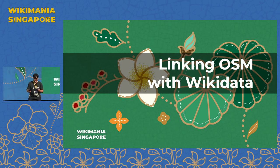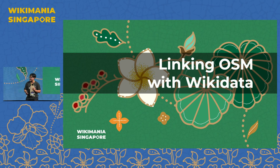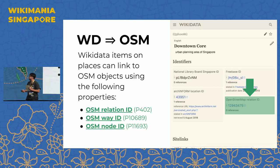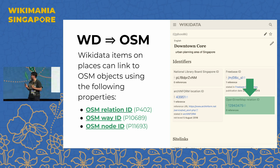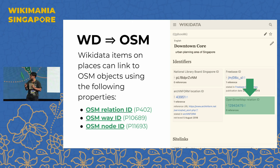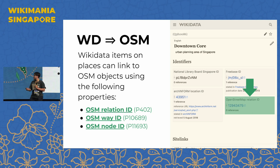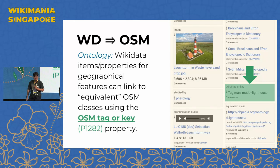Now let's go into linking OSM to Wikidata. First, we can add an OSM relation ID (property P10402), way ID (P10689), or node ID (P11693) on Wikidata items. If you look at any Wikidata item containing geographical features, you can usually add not only geo-coordinates but also relation ID, way ID, or node ID.